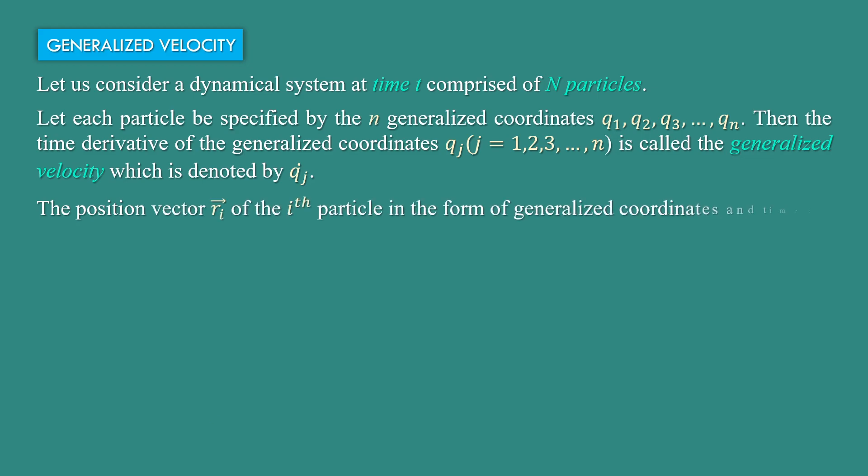The position vector ri of the i-th particle in the form of generalized coordinates and time t can be written as ri equal to ri of q1, q2 dot dot dot up to qf, t.